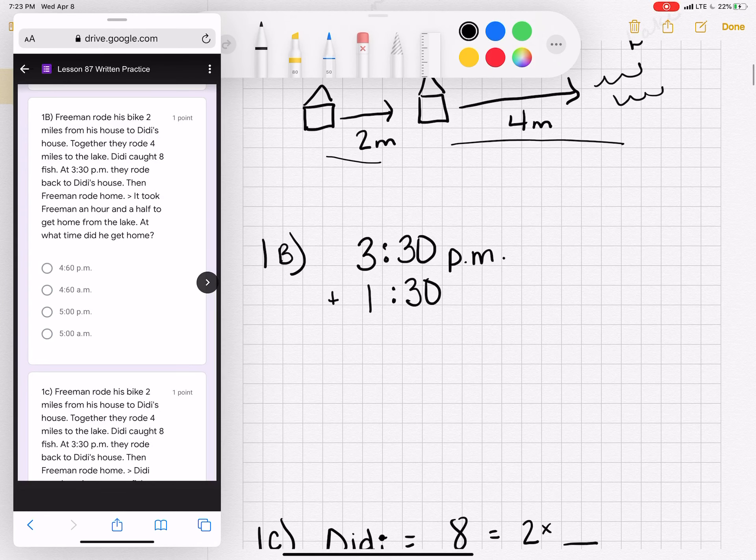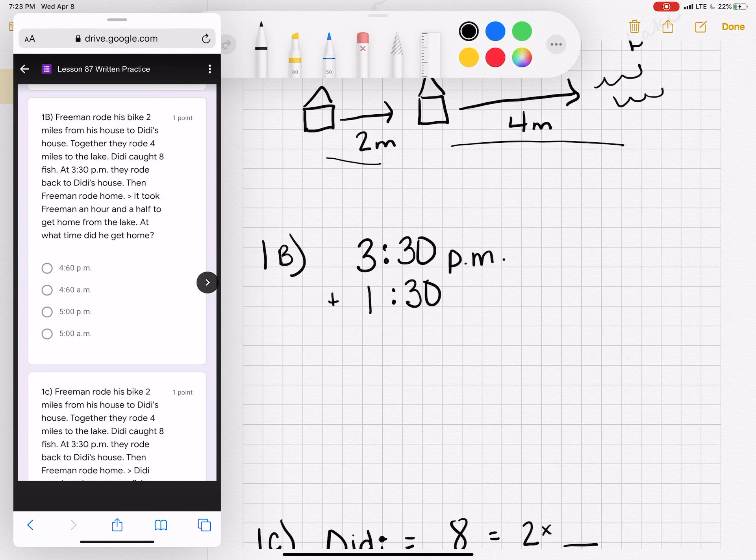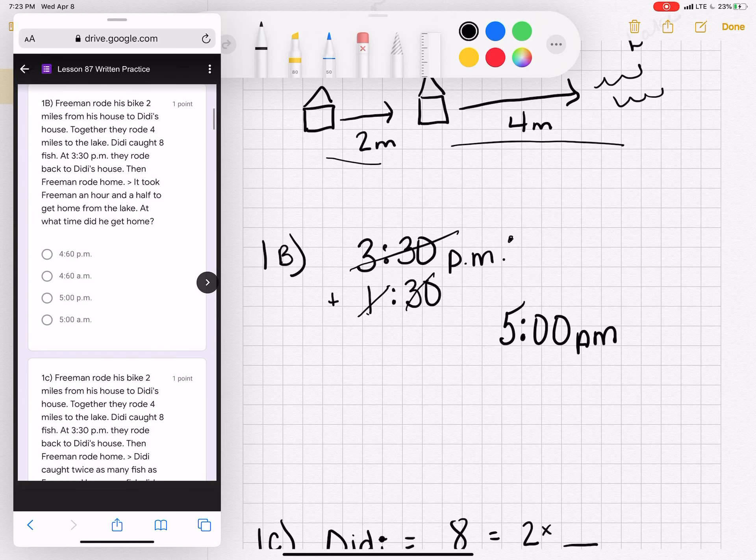1B. It took Freeman an hour and a half to get home from the lake. At what time did he get home? So in that long word problem, it says that he left at 3:30. From 3:30 to an hour and a half after 3:30. So if you add the 30 minutes, it would now be 4 o'clock. If you add the hour, it would now be 5 o'clock p.m.